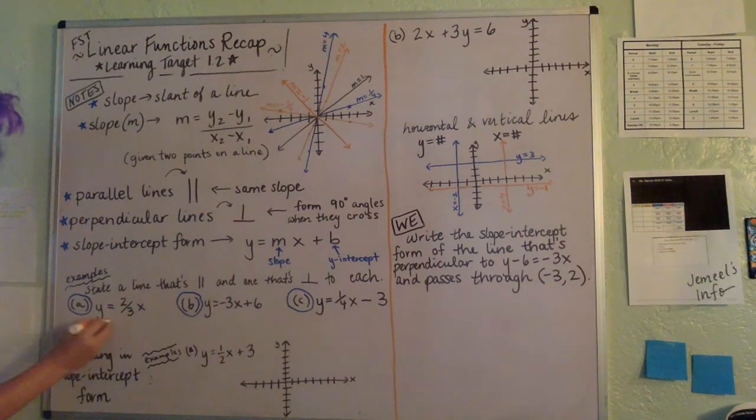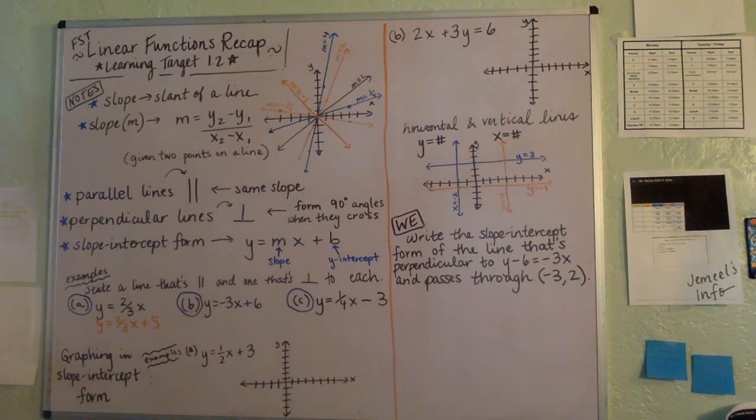But you could say Y equals 2-thirds X and then just change the Y-intercept. So I could say, like, plus 5.